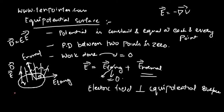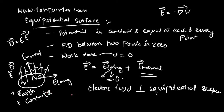What are the examples of equipotential surfaces? The classic example is Earth — the potential is constant and equal at each and every point, so all excess charges can be absorbed by the Earth. The other example is a conductor. A conductor behaves like an equipotential surface for static fields.